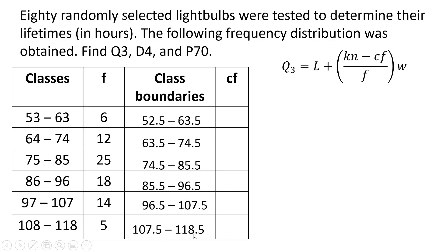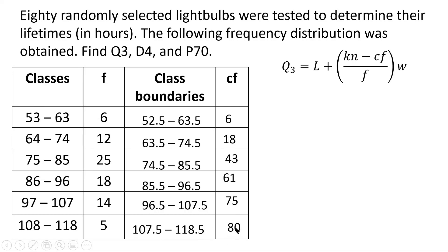Continuing the class boundaries: 96.5 to 107.5, and 107.5 to 118.5. Now we also need the cumulative frequency. We start from the frequency of the lowest data entries, which is 6. So: 6, plus 12 is 18, plus 25 is 43, plus 18 is 61, plus 14 is 75, plus 5 is 80.